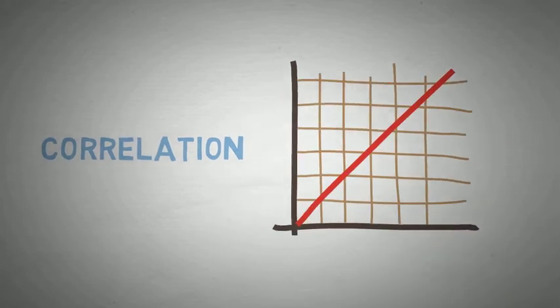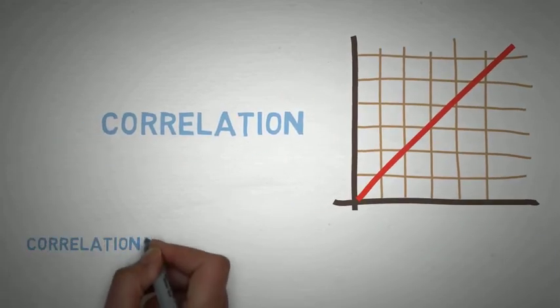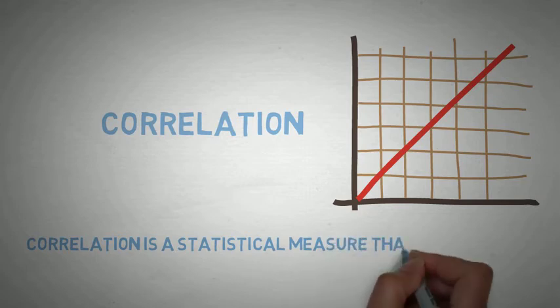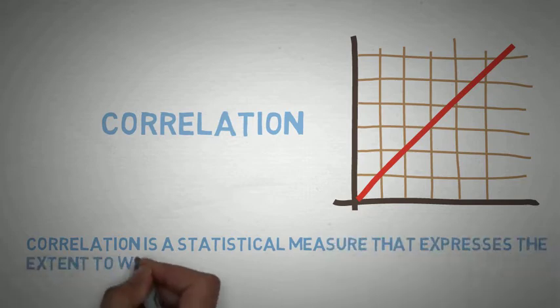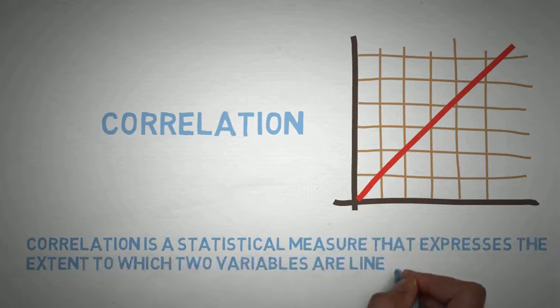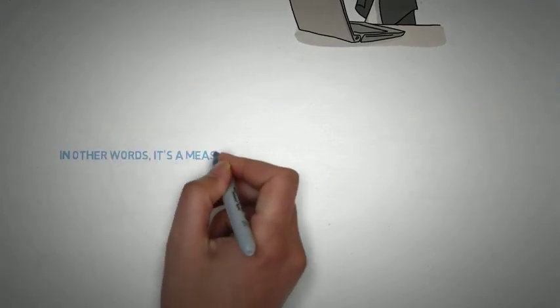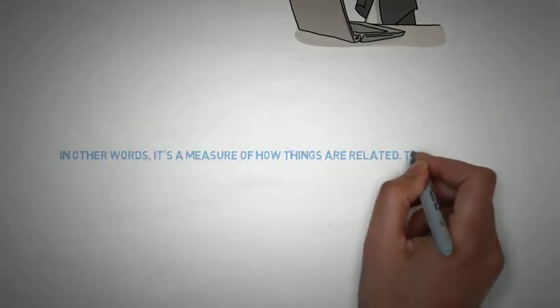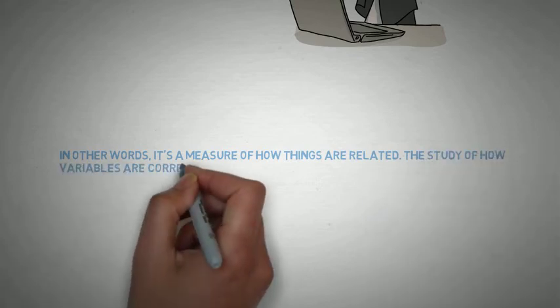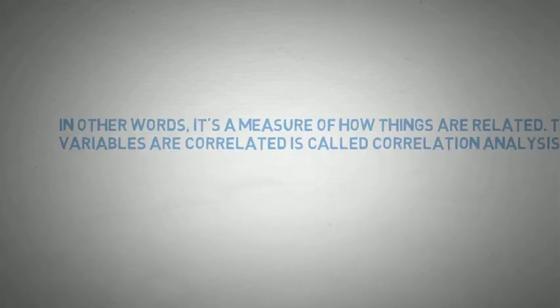So firstly, what is correlation? It is a statistical measure that expresses the extent to which two variables are linearly related. Simply put, it is a measure of how things are related. The study of how variables are correlated is called correlation analysis.